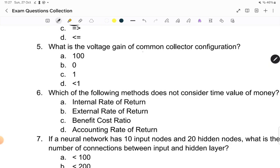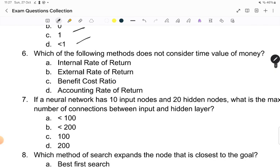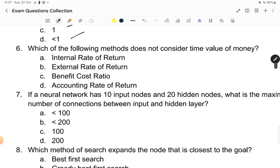Next question is what is the voltage gain of common collector configuration? 100, 0, 1, less than 1. Next is which of the following method does not consider time value of money: internal rate of return, external rate of return, benefit cost ratio, and accounting rate of return?